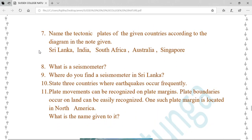Number seven: Name the tectonic plates of the given countries according to the diagram: Sri Lanka, India, South Africa, Australia, Singapore. Number eight: What is a seismometer? Number nine: Where do you find a seismometer in Sri Lanka? Number ten: State three countries where earthquakes occur frequently.